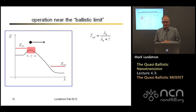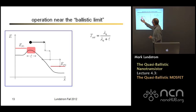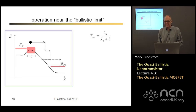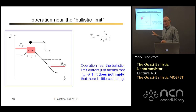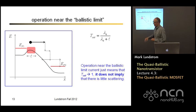A word about operation near the ballistic limit: when we say a device operates near the ballistic limit, we don't mean there is no scattering in the channel. If the electron mean free path is comparable to or larger than the length of this low-field bottleneck regime at the top of the barrier, then most electrons can cross that regime without back scattering. Even if they scatter afterward, they're bound to come out the drain and won't return to the source, so the steady-state current is unaffected even with quite a lot of scattering occurring. The mean free path near the drain end where carriers are highly energetic will be very short, but it's the mean free path at the top of the barrier that matters.